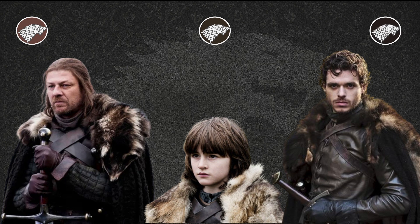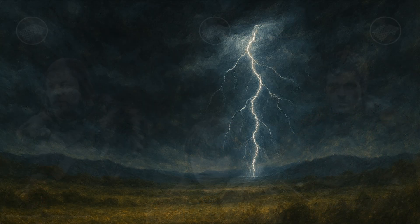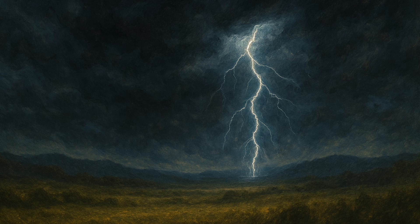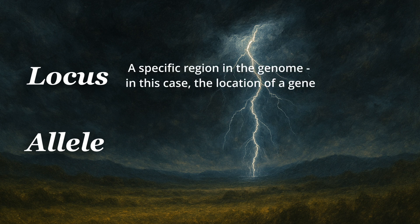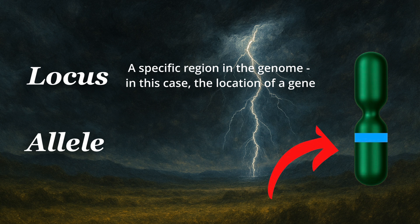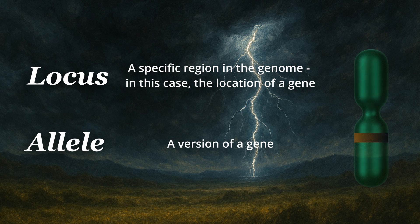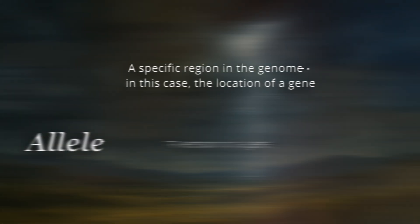We won't consider nuances of hair tone, such as the difference between lighter and darker shades of brown. There are two concepts we need before we begin, but they are very easy to understand: locus and allele. A locus is a specific region in the genome — let's call this the hair color locus. This region contains a hair color gene, and this gene has different versions. Each of these versions is called an allele. Since Westeros has four broad categories of hair color, let's say that there is one allele for each of them.